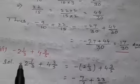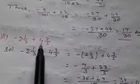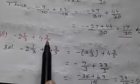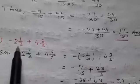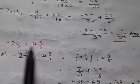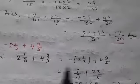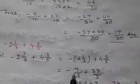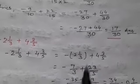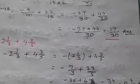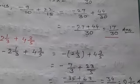Third is: −2⅓ plus 4⅗. At first, we need to convert these mixed fractions into improper fractions, so it becomes −7/3 plus 23/5. Now we find the LCM of 3 and 5.